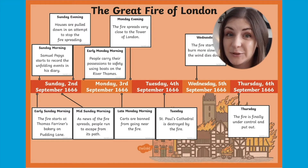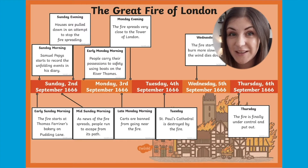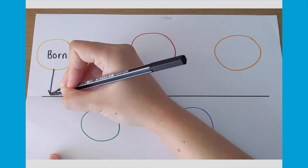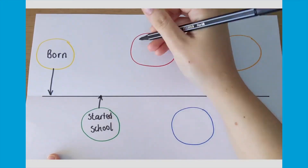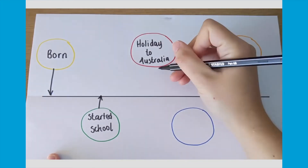Timelines are a really great tool to show children how events happen over time. Why not try making your own? Ask children to remember important events in their own lives and then see if they can put them into time order.